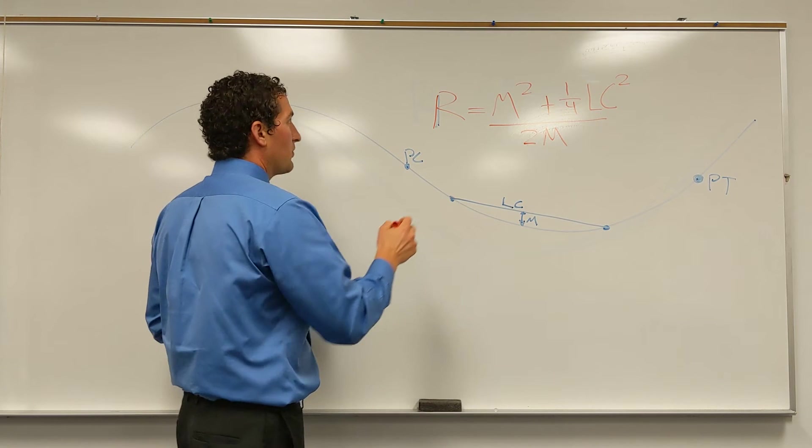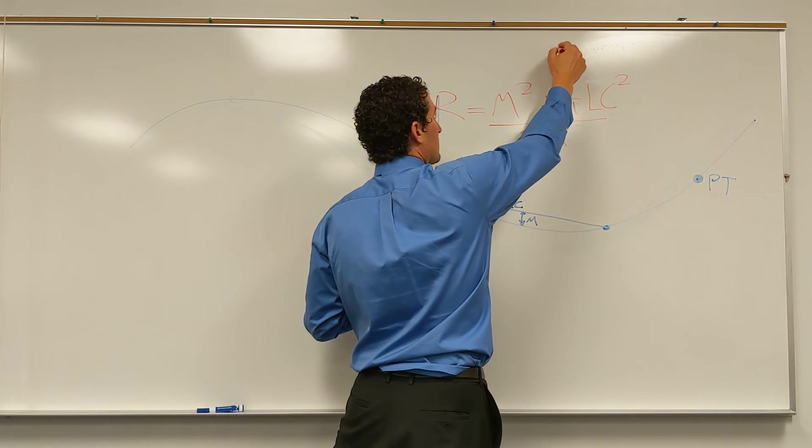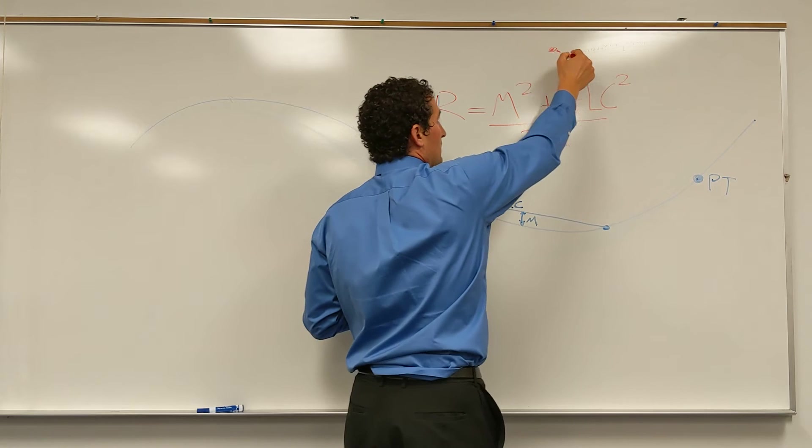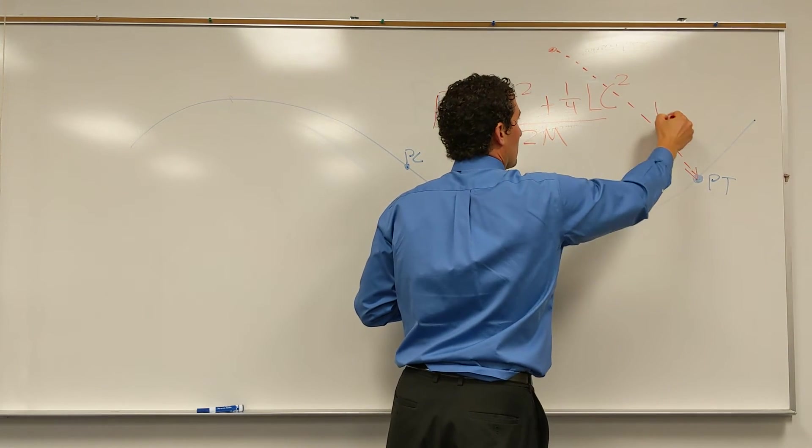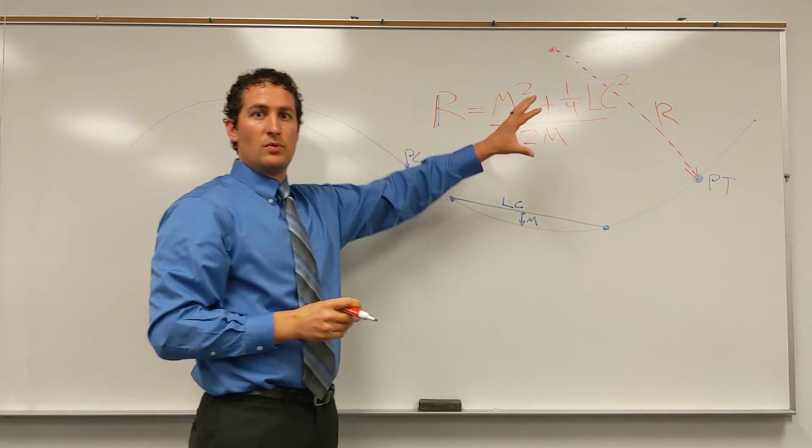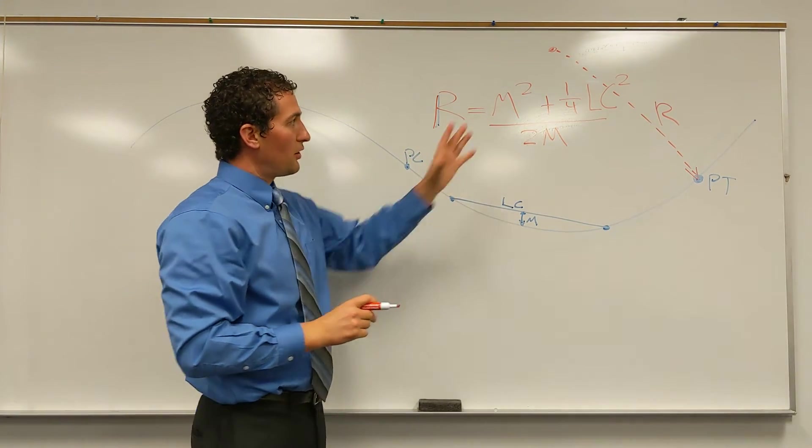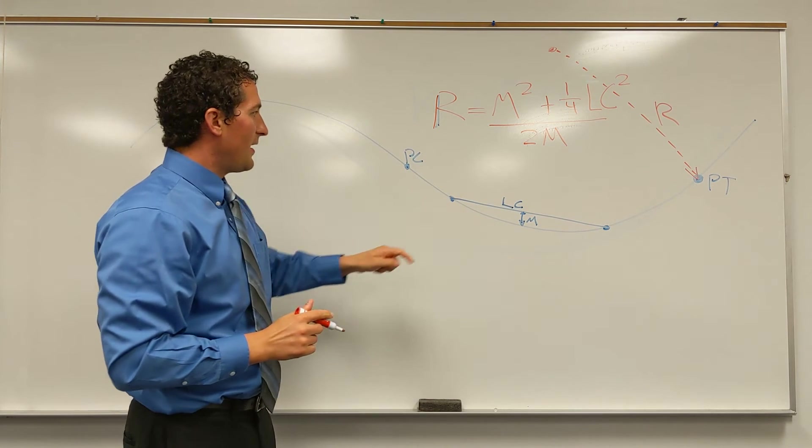If we're thinking about what the radius looks like, this is what the radius would look like when we're looking at the curve. So the radius is the amount of curvature that we have.